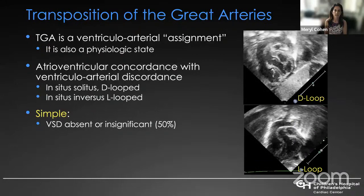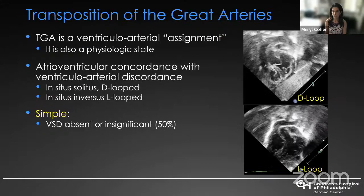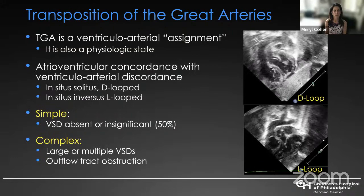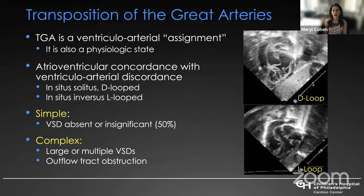In Von Praegen terms, in situs solitus, we typically consider this a D-looped heart. In situs inversus, it's an L-looped heart. Some people use the term D-transposition, referring to the looping of the ventricles. Because it can be very much confused with corrected transposition, we tend to use the standard term transposition of the great arteries. There's the simple form — either no VSD or an insignificant VSD — accounting for about half of patients. Complex forms include large or complicated VSDs plus or minus outflow tract obstruction.